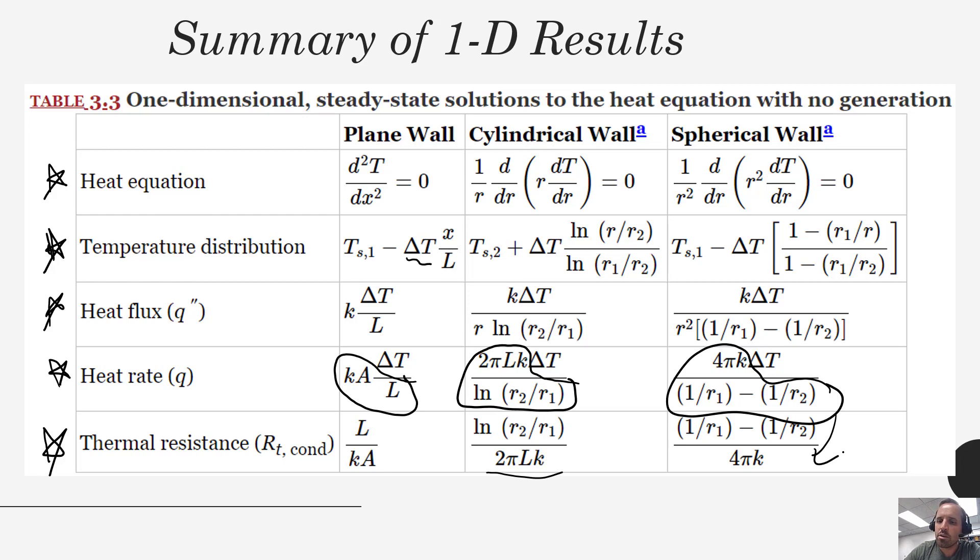I think this table is super handy and this will help you solve a lot of problems. You can just refer to this table to get the temperature profile, the heat flux, the heat rate, or the thermal resistance. However keep in mind that your system has to meet these conditions: one dimensional, steady state, no generation, and also constant thermal conductivity.